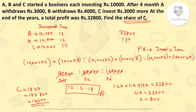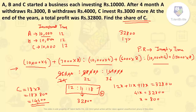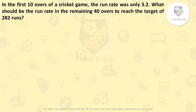In this sum, the main thing is: whenever there is a change in investment, solve it by splitting into periods. For first 4 months the investment was 10,000, next 8 months it was different. Similarly for B and C, we got the profit ratio and divided the final profit of 32,800 by taking common multiple.